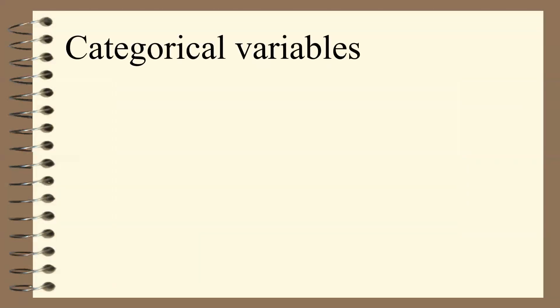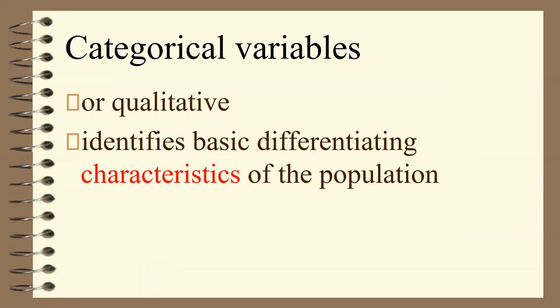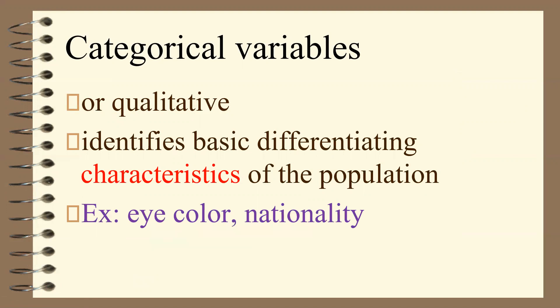There are types of variables. We have categorical variables, which can also be called qualitative variables. A categorical variable identifies basic differentiating characteristics of the population — for example, eye color or nationality. Anything that is a category is non-numbered.